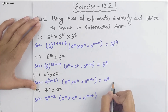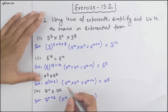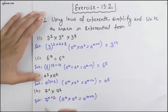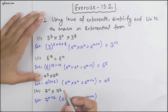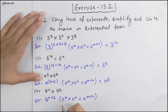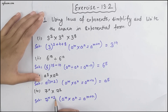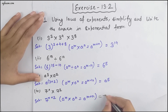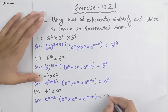Moving to the next part, we have 7 raised to the power x into 7 raised to the power 2. From there we get 7 raised to the power x plus 2, that is, 7^(x+2).